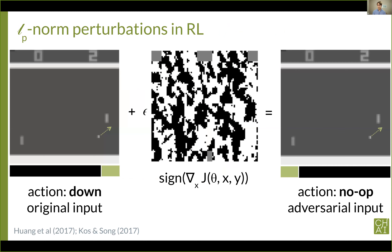So far we've just discussed supervised learning — what about reinforcement learning? Unsurprisingly, reinforcement learning policies are also vulnerable to adversarial examples in their observations. Most prior work, such as that by Santy Wang and others, and Yeni Coast and Dawn Song, have focused on this. Specifically, they differentiate through the victim policy to find perturbations which, when added to the observation, will cause the policy to take the wrong action.